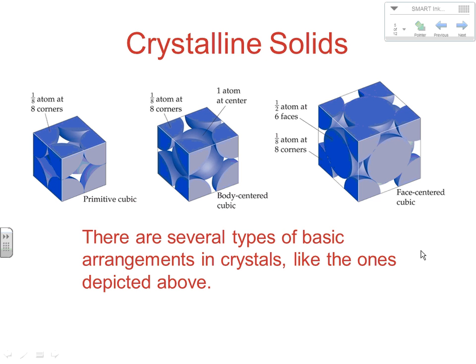In the body-centered cubic, we've got our eight corners — which gives one — and then one in the center, for a total of two atoms inside the cubic cell. In the face-centered cubic, the eight corners give one, and then we have a half of an atom on each of six faces, giving three, for a total of four. So: primitive cubic has one atom, body-centered has two, and face-centered has four atoms inside the unit cell.